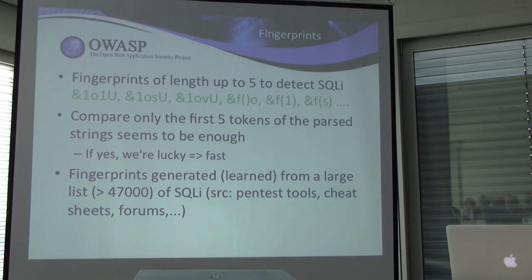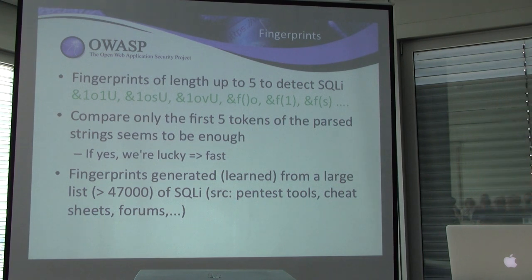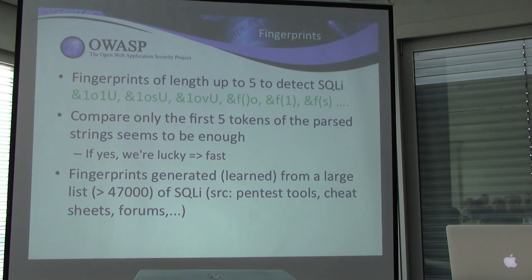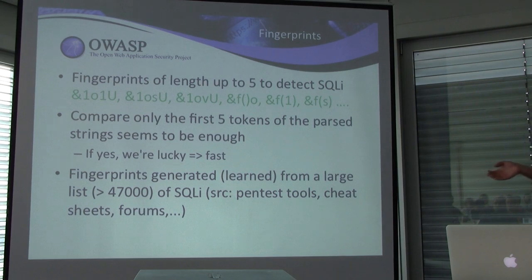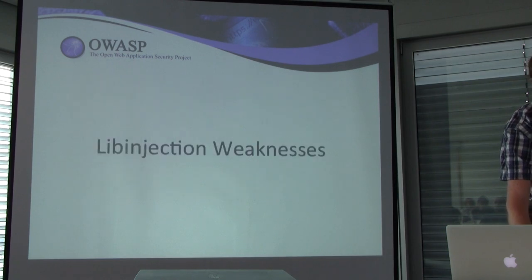How does the decision work — whether a user input is SQL injection or not? Lib injection has a set of fingerprints, and these fingerprints have a length of up to five. Lib injection compares only the first five tokens of your input string. According to Nick, that's enough to decide whether it's SQL injection or not. If this is true and secure, that's really cool — because that's unbelievably fast. You only have to parse the first five tokens, and you have a quite small list of fingerprints which you can sort, binary search, and so on. This fingerprint list is basically learned or generated from a large list of SQL injection patterns.